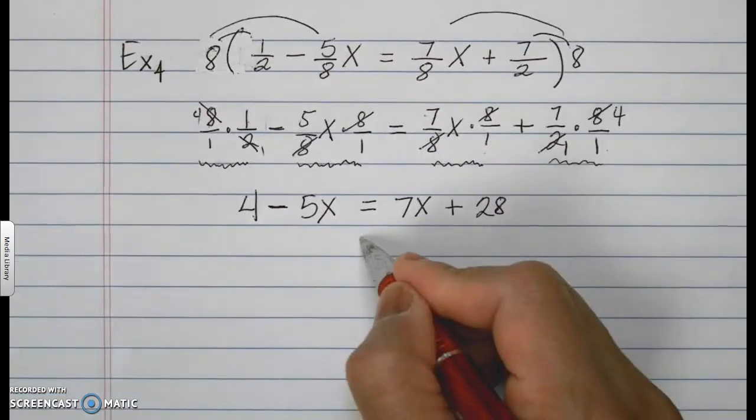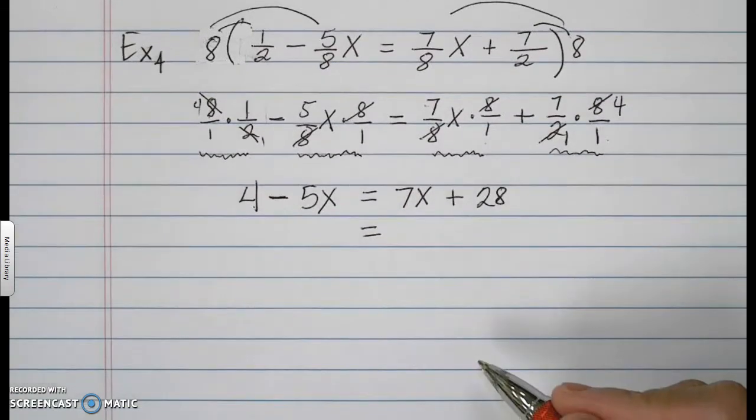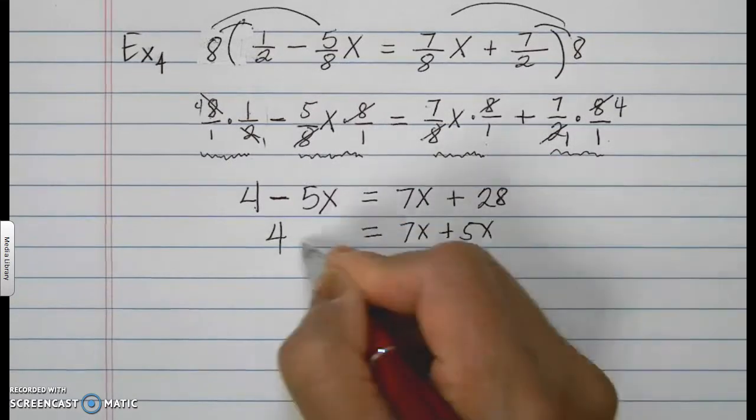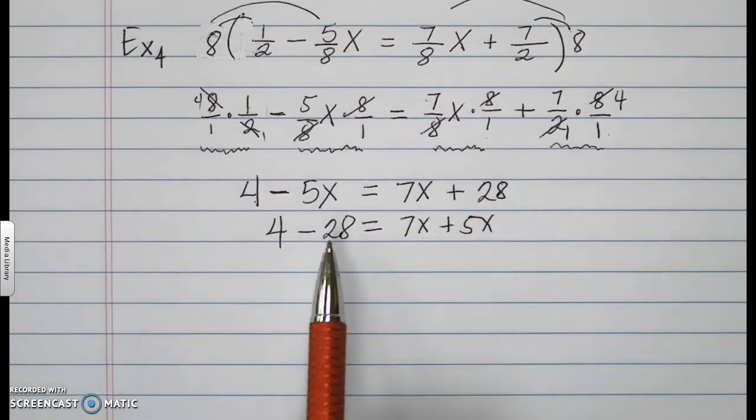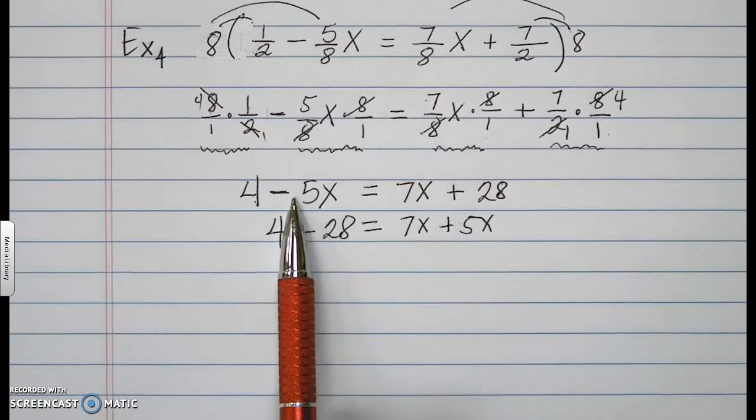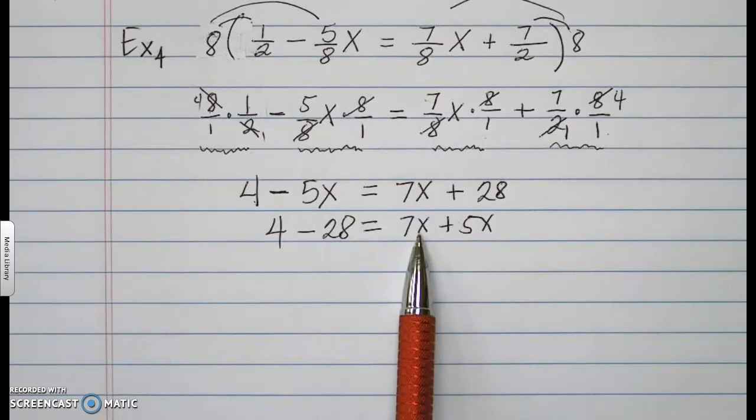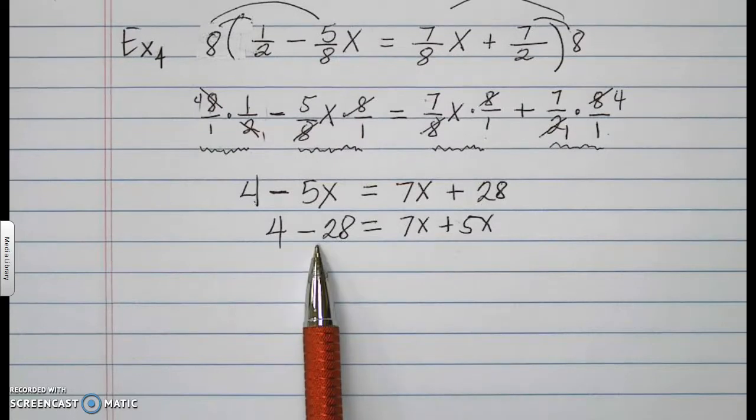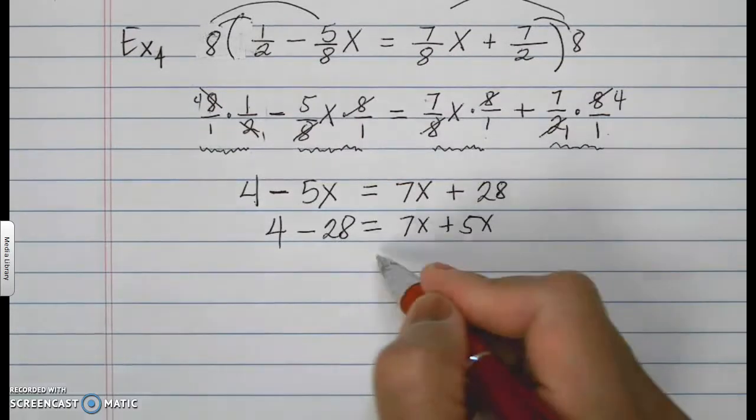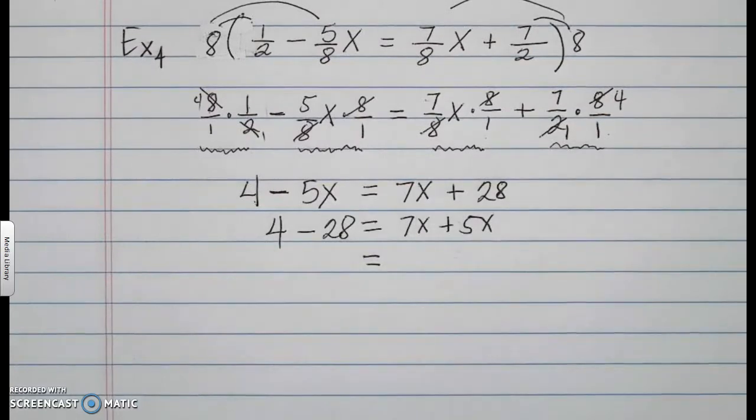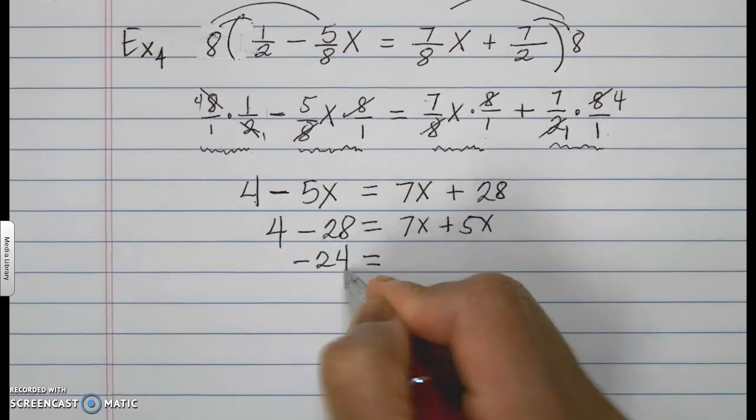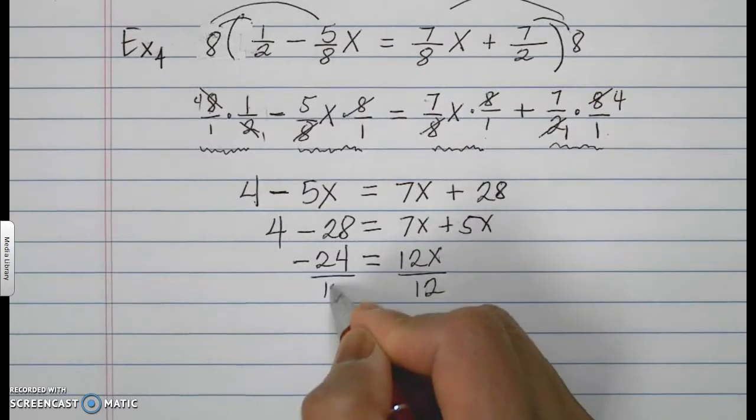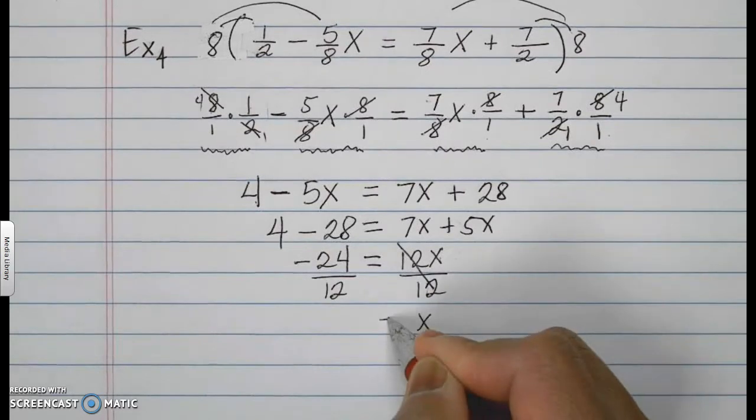And then now you can put your like terms together. So, this is 7x plus 5x, and this is 4 minus 28. The 5x here became positive because this is negative and I moved it to the other side. The 7x stayed the same because it did not move. The 4 stayed the same. It did not move. And the positive 28 turned into a negative 28 because it went to the other side. Now, therefore, you're going to operate on this one. By the rule of integers, this is going to turn to negative 24, and this will turn into a positive 12x. Divide that by 12. Divide this by 12.